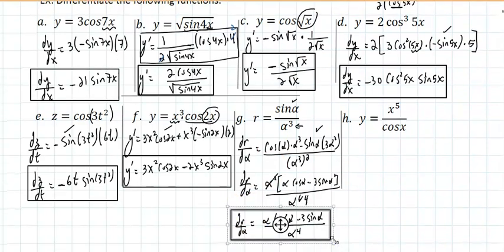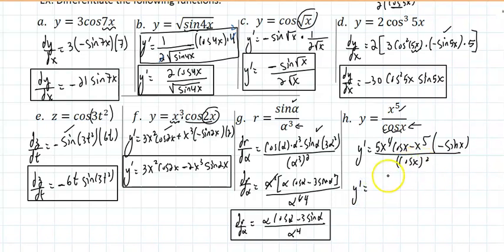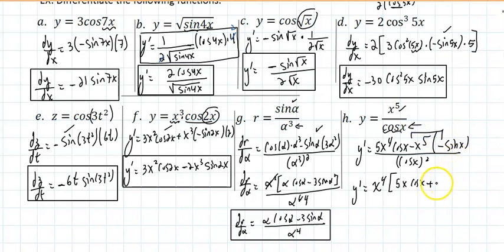For the last example, finding y' using the quotient rule: y' = [5x⁴·cos(x) - x⁵·(-sin(x))] / cos²(x). You can factor x⁴ from the numerator: x⁴[5cos(x) + x·sin(x)] / cos²(x). Since negative times negative is positive, the sine term becomes positive.